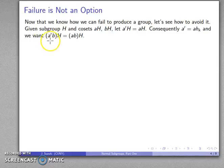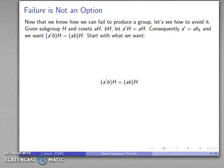I want to make sure that a'bH is the same as abH. Because these two cosets are the same, I want to make sure the product of these two cosets is the same. So I'll start with what I want: product equals product. If two cosets are equal, I know the thing that generates the coset has to be an element of the other coset, which means that a'b has to be ab times something.